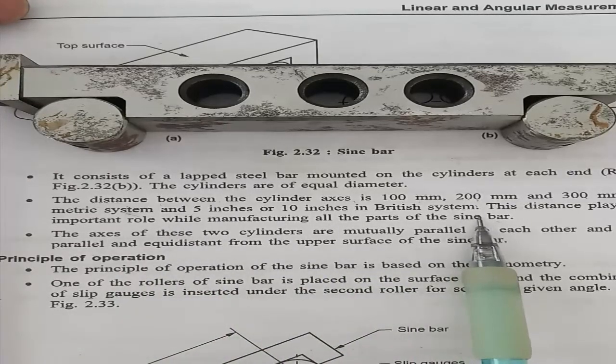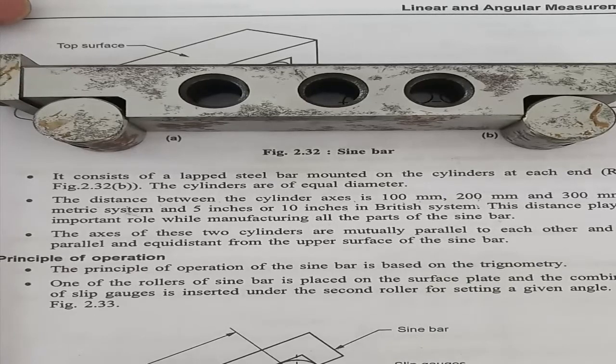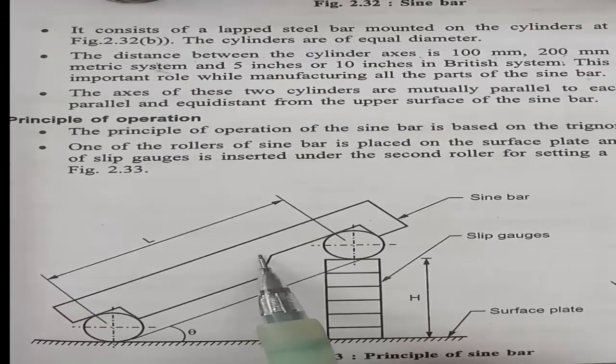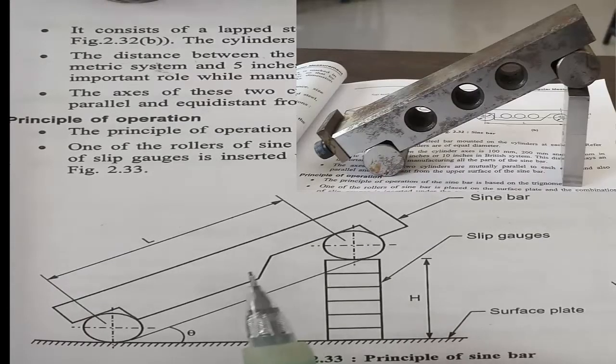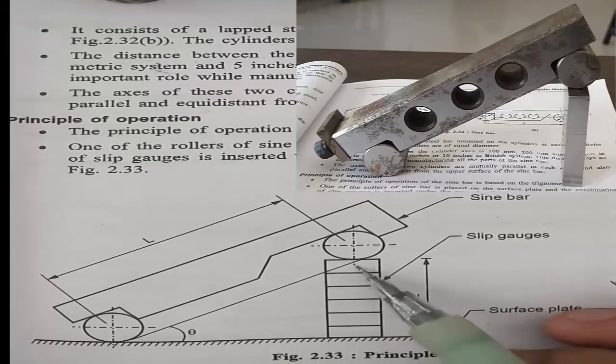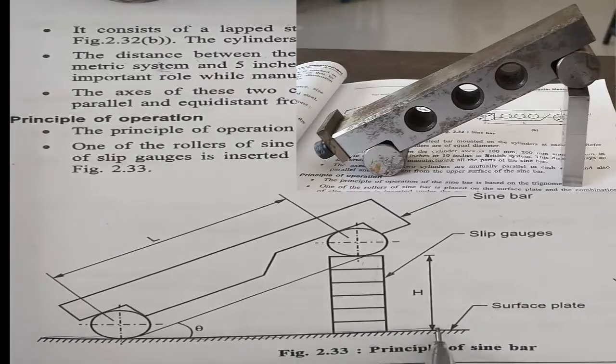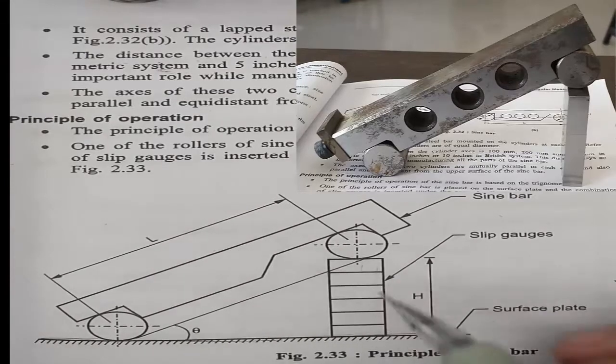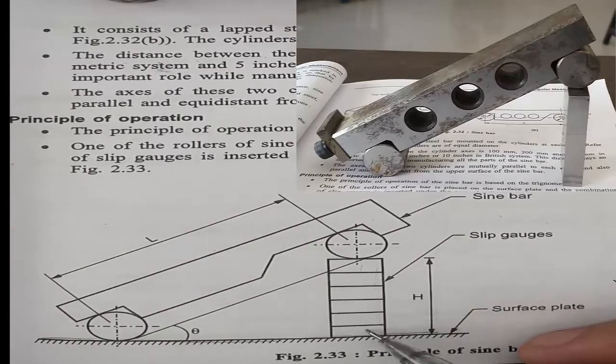Now the principle of operation - how we can use the sine bar. You can see the figure. These are slip gauges from the ground level. Whatever the inclination of any object, we have to arrange slip gauges in that manner.